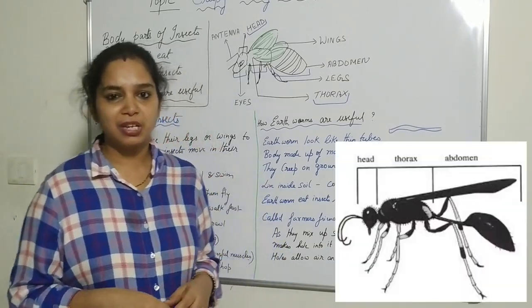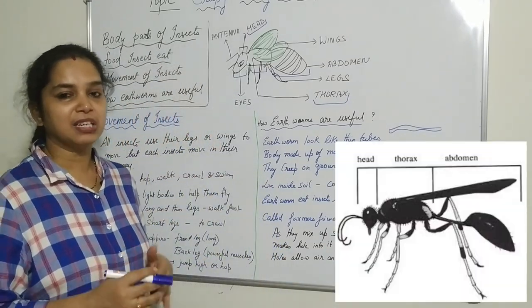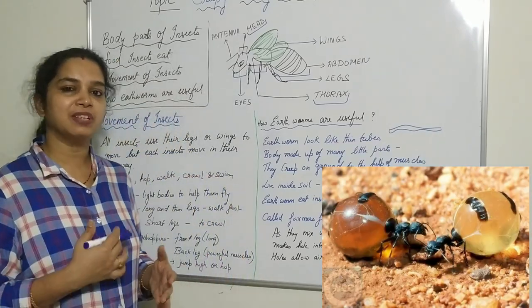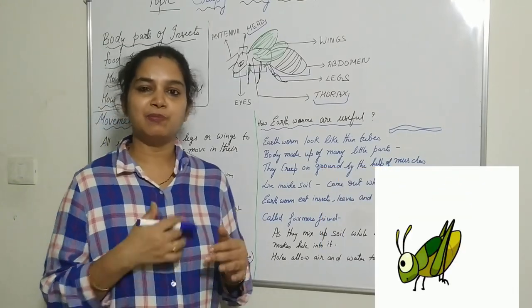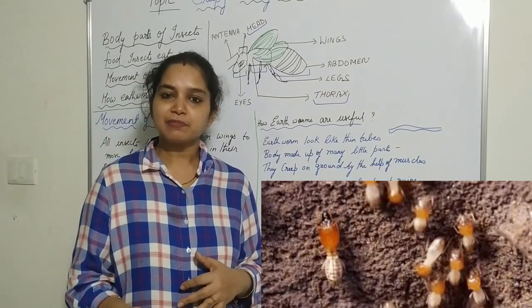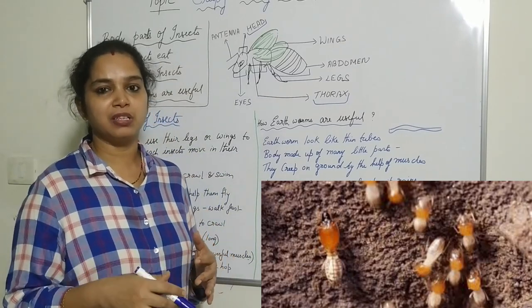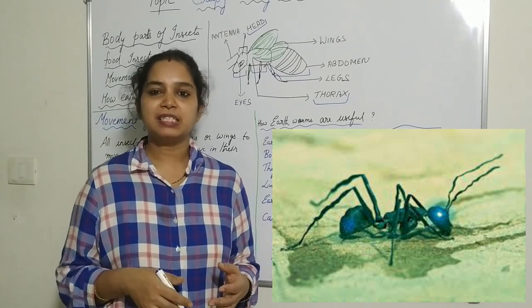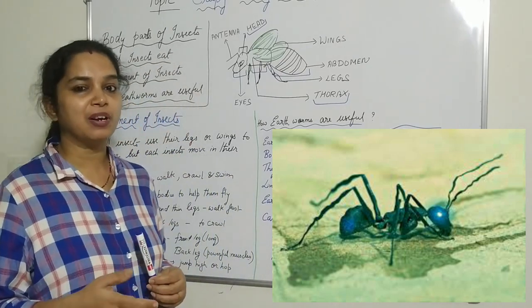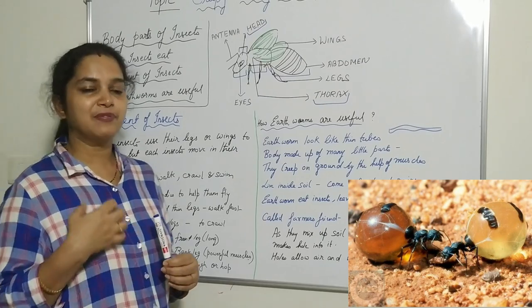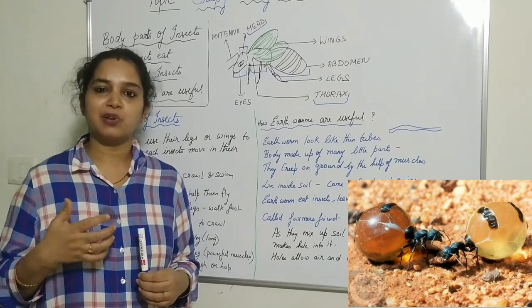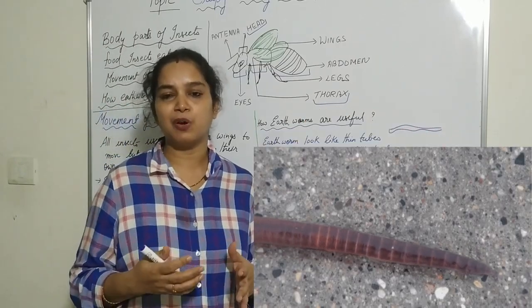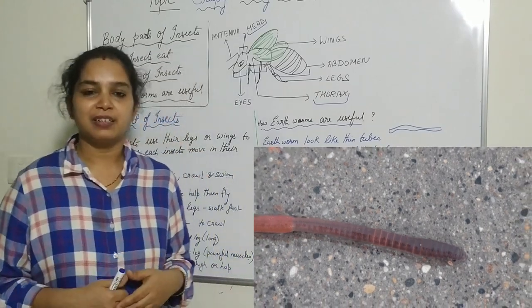Today we studied about creepy and crawly creatures — that is, insects. We covered the body parts of insects, their movement — some fly, some crawl, some hop, some swim — and what they eat, as different insects have different mouth parts to feed on different foods. We also learned about the earthworm and why it is called the farmer's friend.